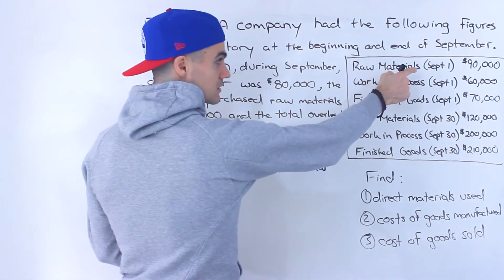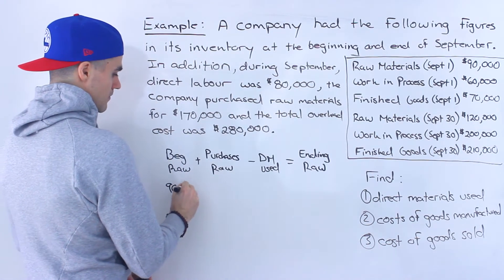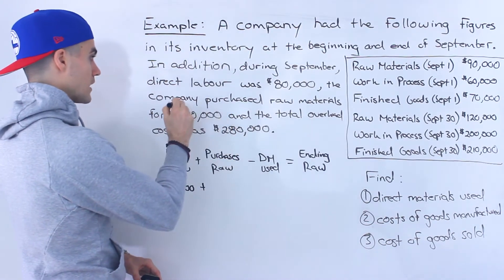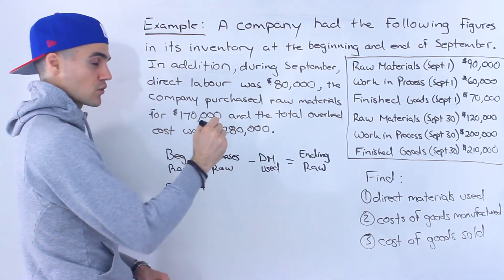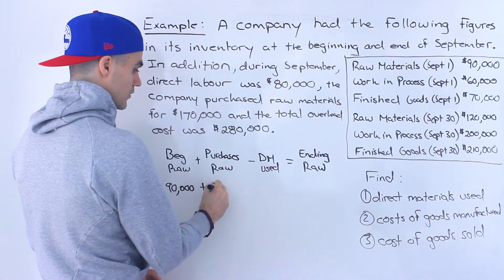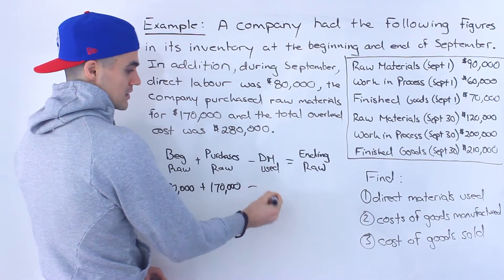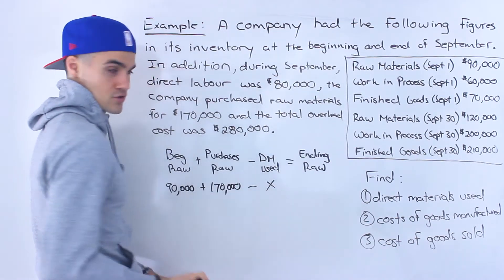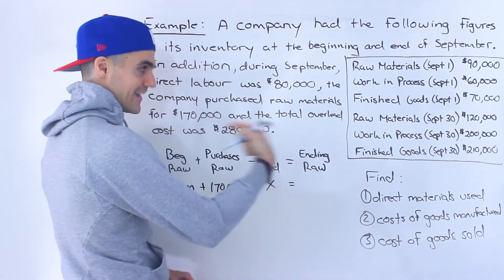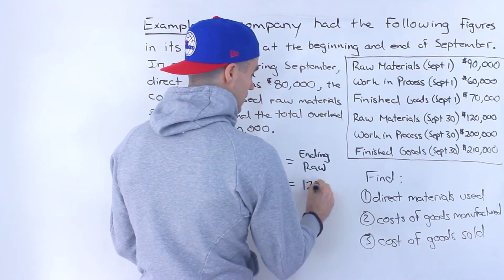We just plug in what we're given. The beginning raw materials on September 1st is $90,000, so that goes here. Then we're told there were $170,000 worth of purchases of raw materials, so that goes here. The direct materials used is what we're solving for, so let's put a variable X there. Then the ending raw materials — end of the period, September 30th — is $120,000.